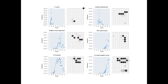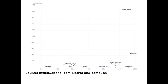It turns out that AlphaGo Zero learned moves which are well known to the Go community. On the x-axis you see training time and on the y-axis you see the frequency of how often those moves were used. More complex moves were used in later training time while simpler moves were no longer used. Also, AlphaGo Zero invented moves which hadn't been known to the community, and researchers are currently analyzing those moves.